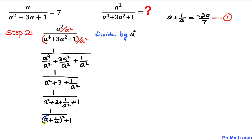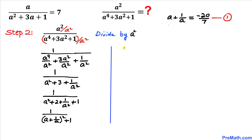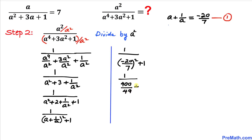From equation 1, we know that a plus 1 over a equals negative 20 divided by 7. Substituting this in, the expression becomes 1 divided by (negative 20 over 7) squared plus 1. Squaring negative 20 over 7 gives us 400 divided by 49, so we have 1 divided by 400 over 49 plus 1.